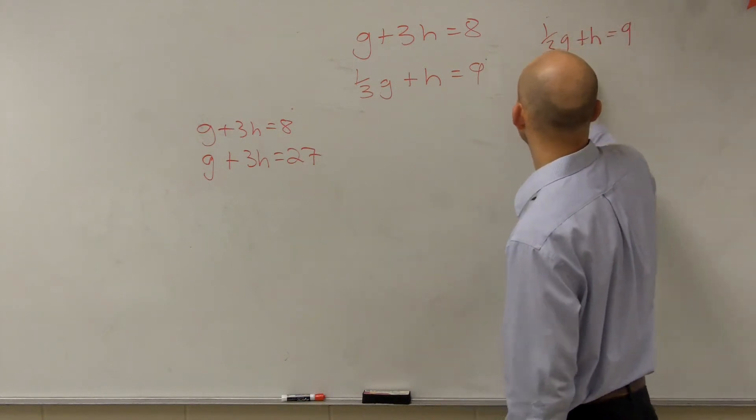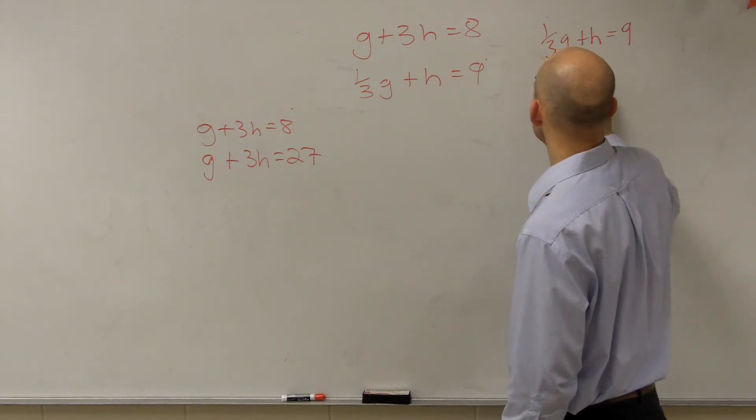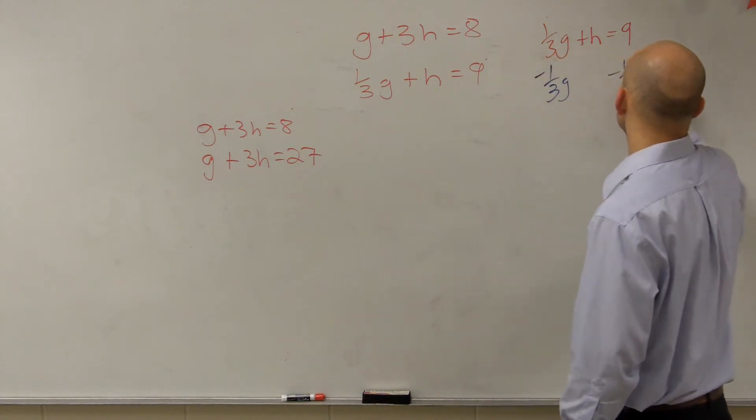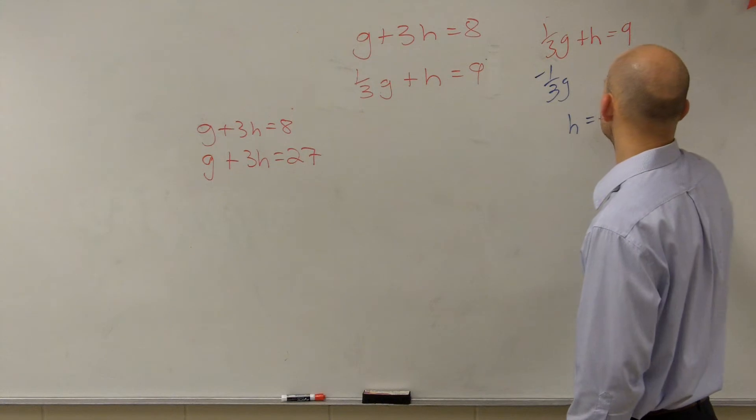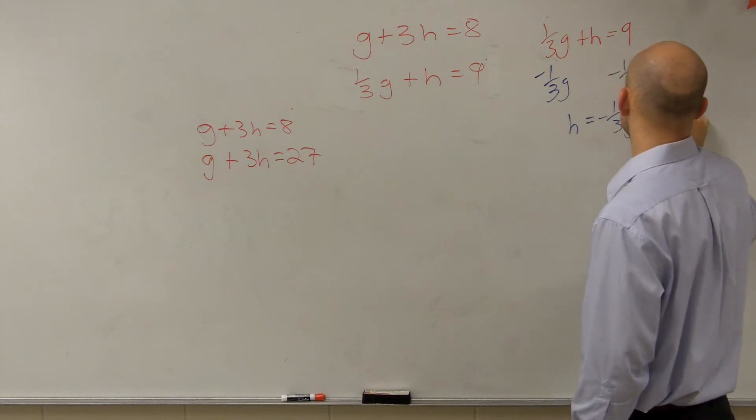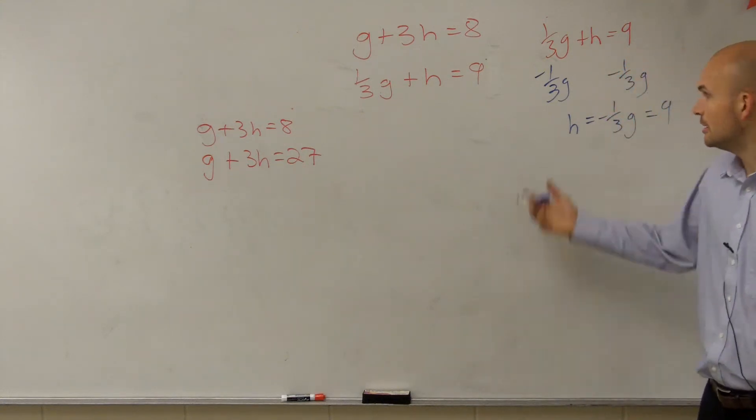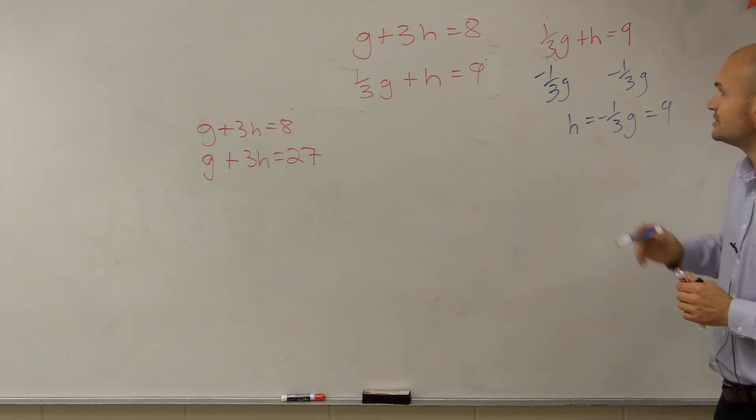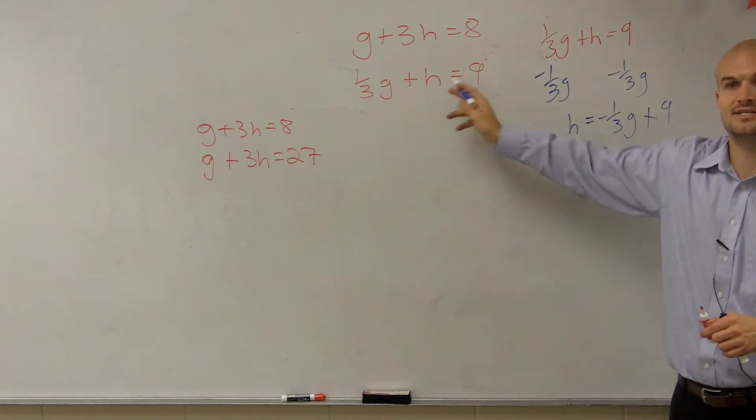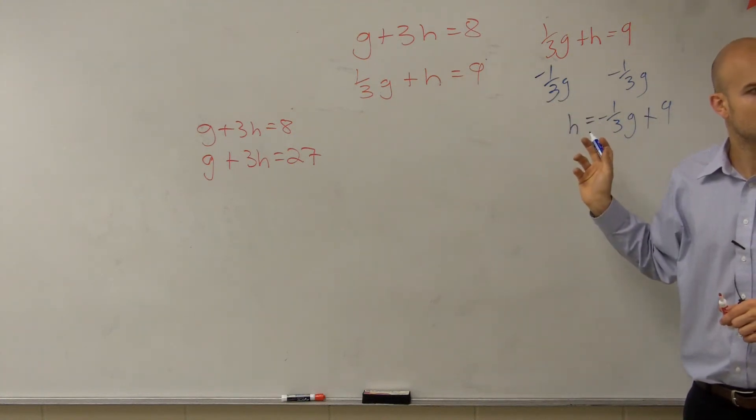To solve for h, I'm going to subtract 1/3 g. And I get h equals negative 1/3 g equals 9. Now, h equals negative 1/3 g plus 9. So I took this and I solved it for h. Make sense?